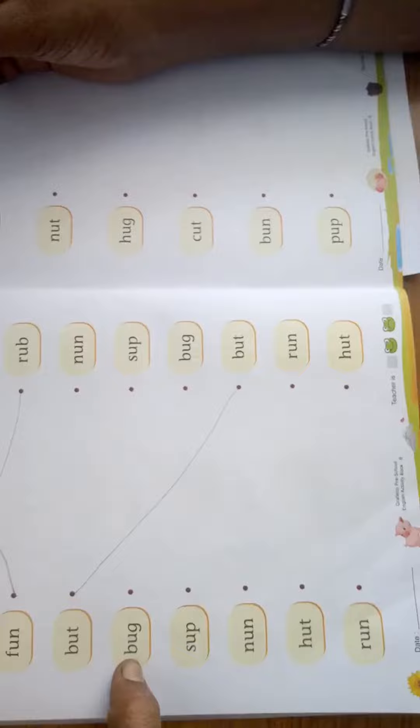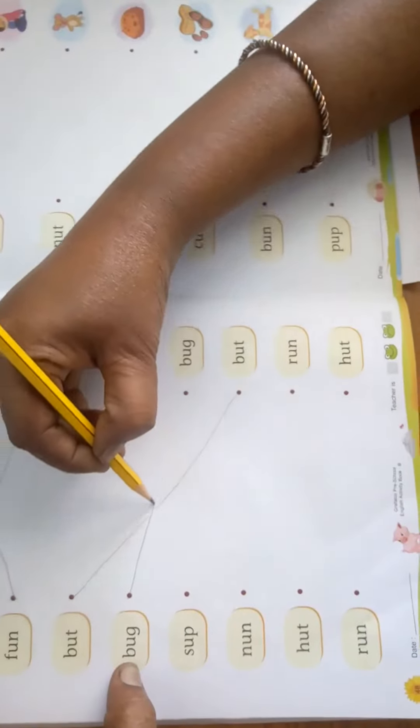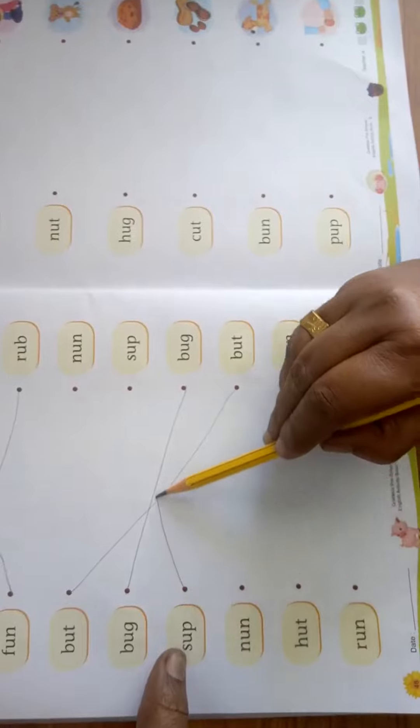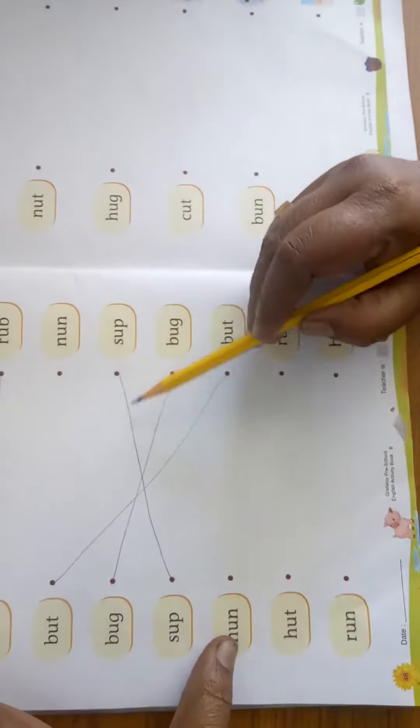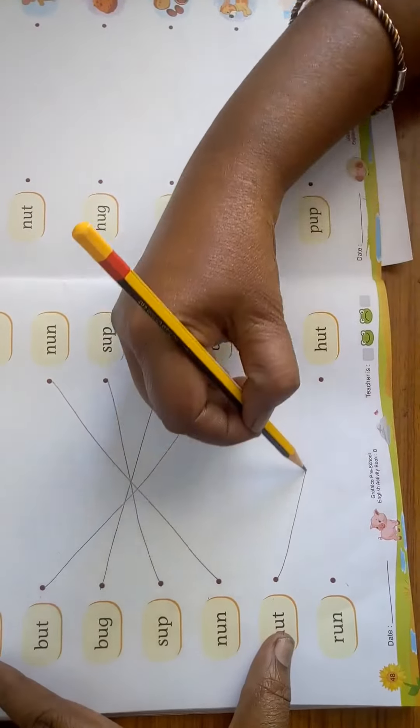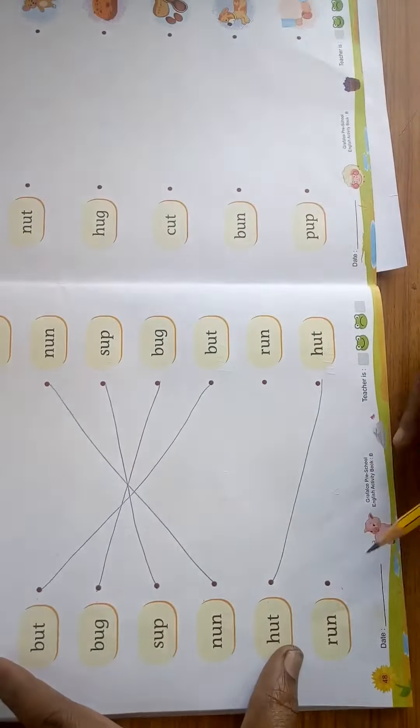Bug, B-U-G, bug. Sup, S-U-P, sup. N-U-N, none.